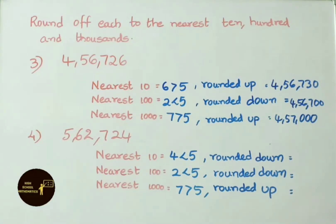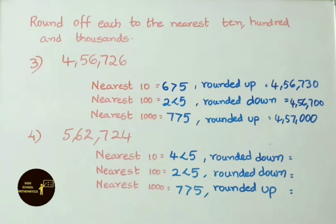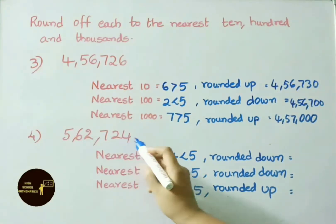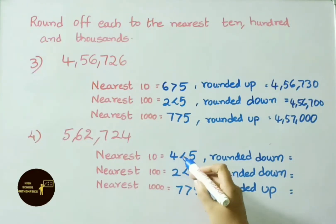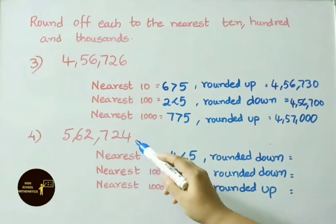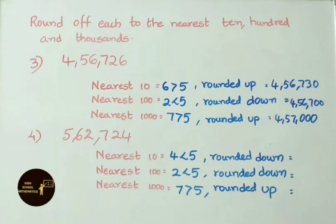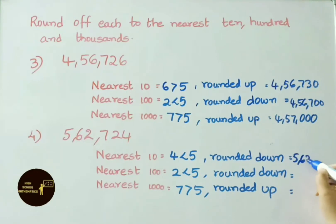Fourth number: 5,62,724. Nearest 10: the digit to the right of the 10s place is 4. Since 4 is less than 5, we round down — make 4 into 0 and keep the rest the same. So 5,62,720 is the answer.